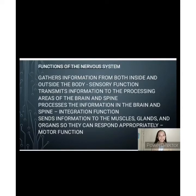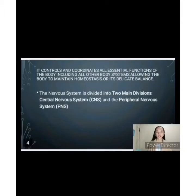Your eyes, ears, tongue, nose, and the nerves all over your body take in information about your environment. Then the nerves carry that data to and from your brain. It controls and coordinates all essential functions of the body, including all other body systems, allowing the body to maintain homeostasis or its delicate balance.